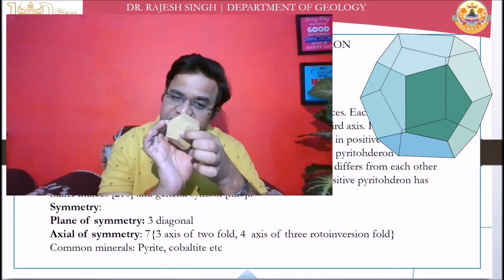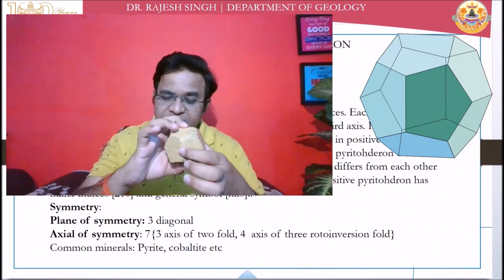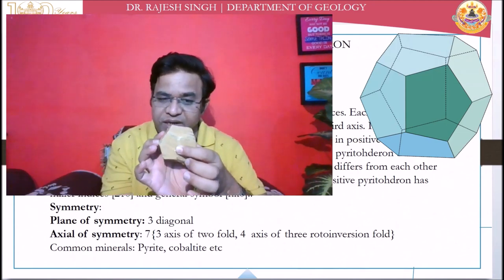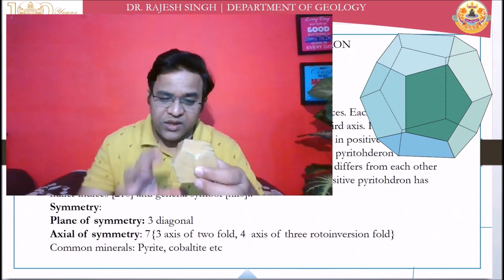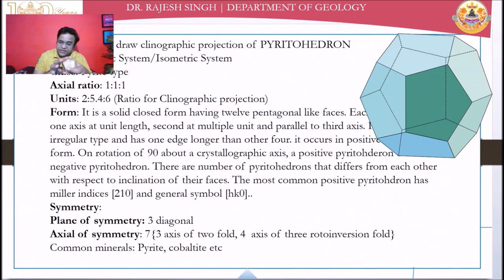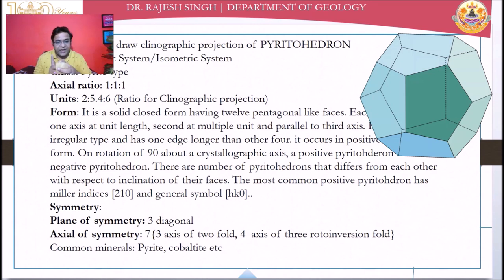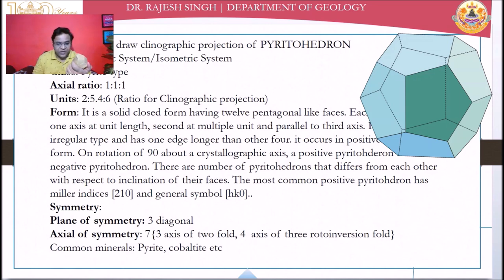This is the a3 axis, this one is a1, and this one is a2. Each pentagon face will cut one axis at unit distance, another crystallographic axis at twice the distance, and will be parallel to the third. The general symbol is hK0 and the unit symbol is 210.